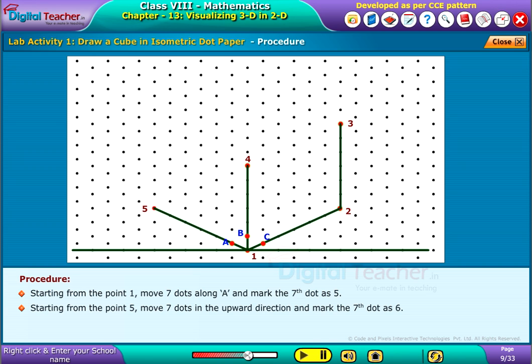Starting from the point 5, move 7 dots in the upward direction and mark the 7th dot as 6. Join the points 6, 4 and 3.